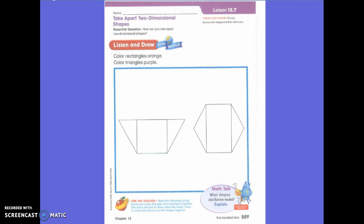So the directions say to color rectangles orange. Go ahead and color the rectangles orange. I'm going to show you all of the rectangles. How do you know which shapes are rectangles? Because they're long. Okay, very good. They have long sides.